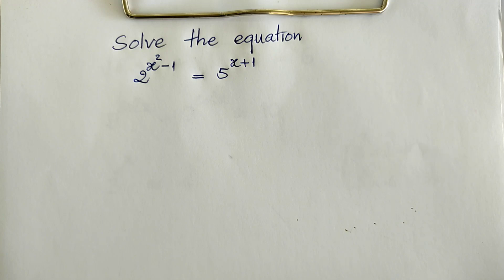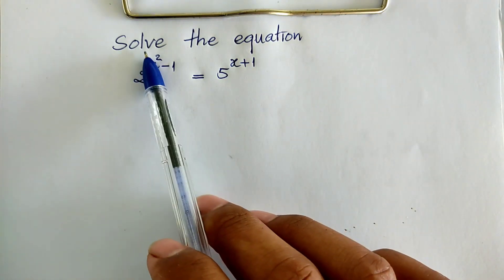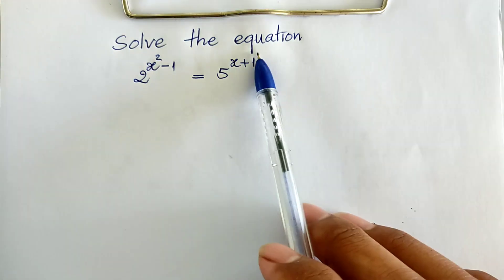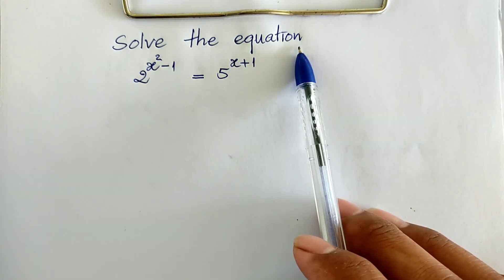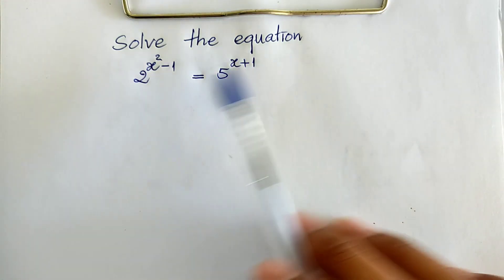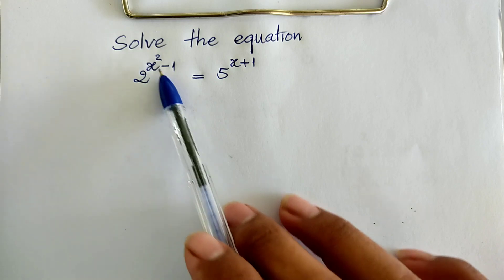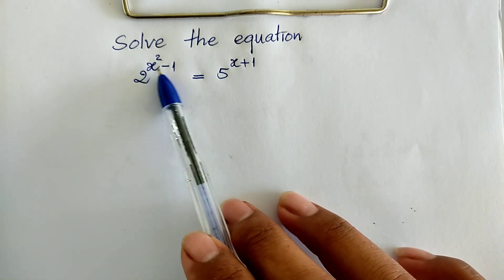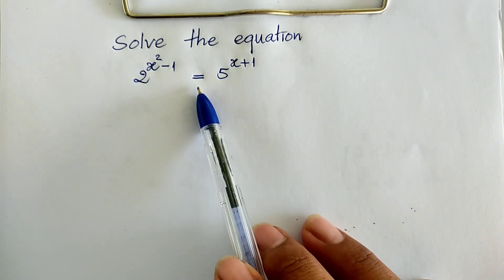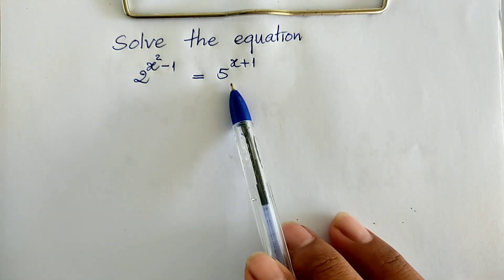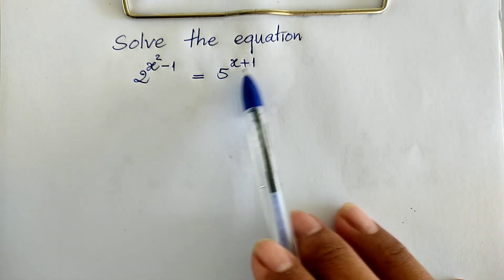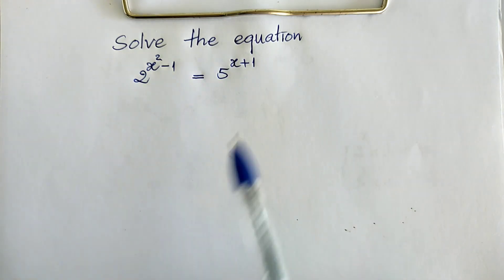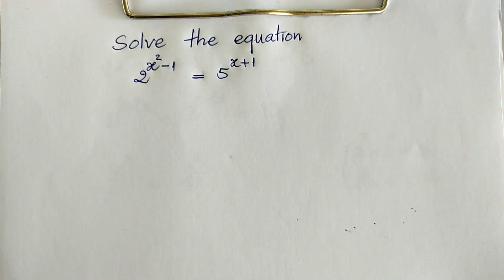Today I have one exercise like on paper. Solve this equation. The equation is 2 power x squared minus 1 equals 5 power x plus 1. Do you know how to solve this? If you know, please do it.